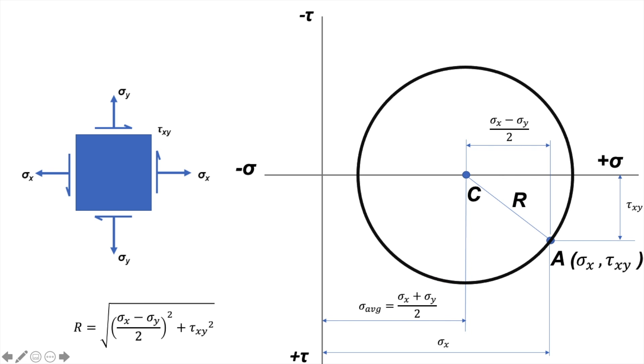Now we can easily draw the Mohr circle. Once that is done, we can generalize and see how a rotation of the element would result in the transformed stresses.